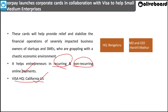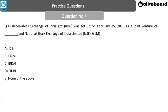Visa is headquartered in California, US. Razorpay is headquartered in Bengaluru, Karnataka, and the current MD and CEO of Razorpay is Mr. Harshil Mathur.